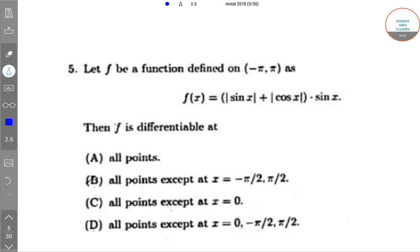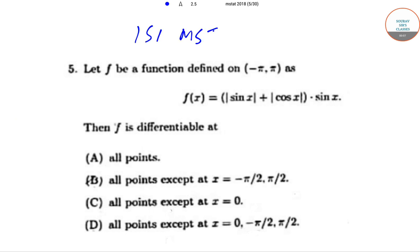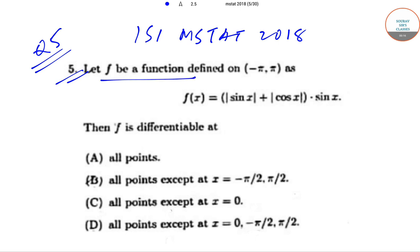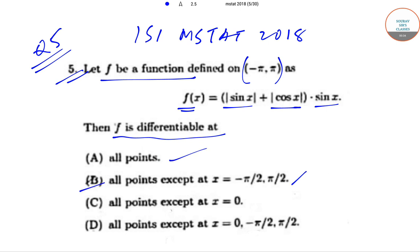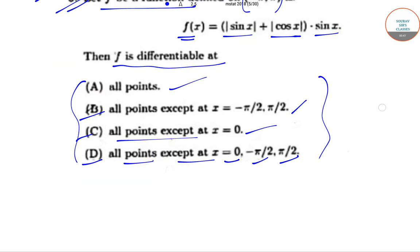Hello students, welcome to Sources Classes. Today we'll be solving the ISI Amstead question paper of year 2018, starting with question number five. Let f be a function defined on the open interval minus pi to pi, and f(x) = |sin x| + |cos x|. Then f is differentiable at: option A all points, option B all points except x = -π/2 and π/2, option C all points except x = 0, option D all points except x = 0, -π/2, and π/2.